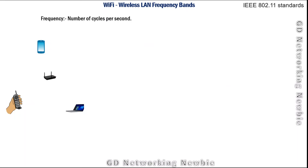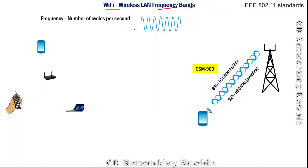In this video we are going to discuss about frequency channels assigned to Wi-Fi or wireless LAN, and more specifically the frequency bands which are reserved or used by various IEEE 802.11 standards. Frequency is the number of cycles per second, and like other wireless communication standards such as mobile and satellite communication, Wi-Fi devices also use frequency for transmission and reception.